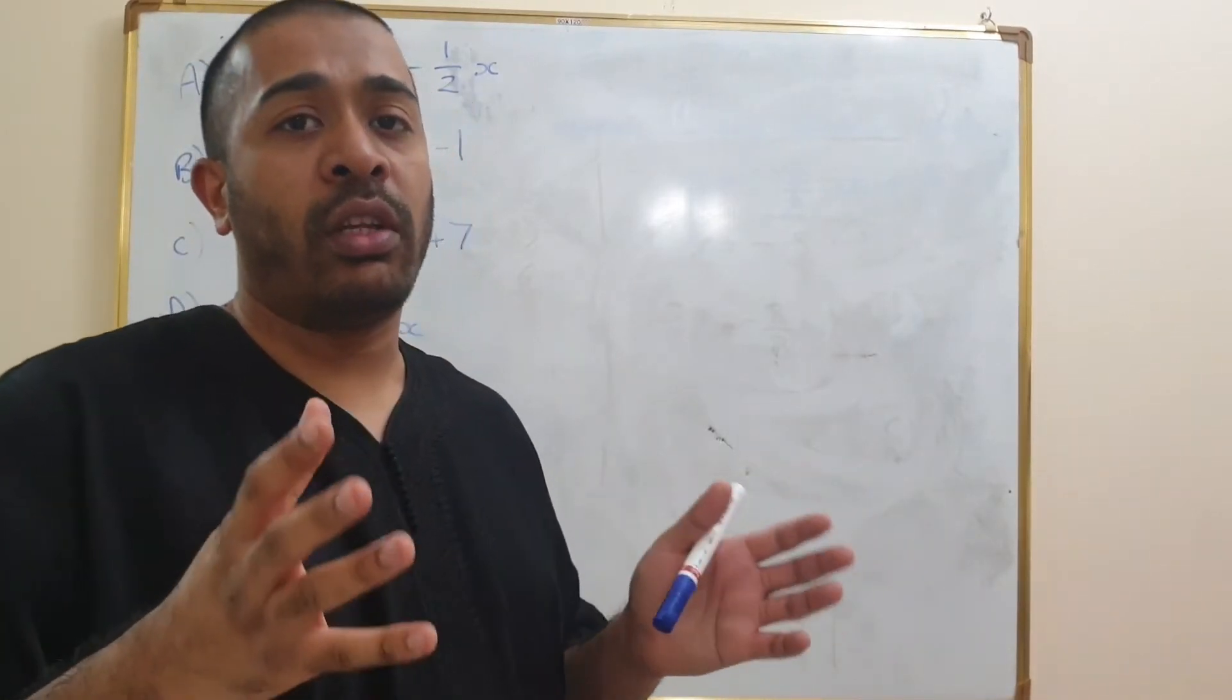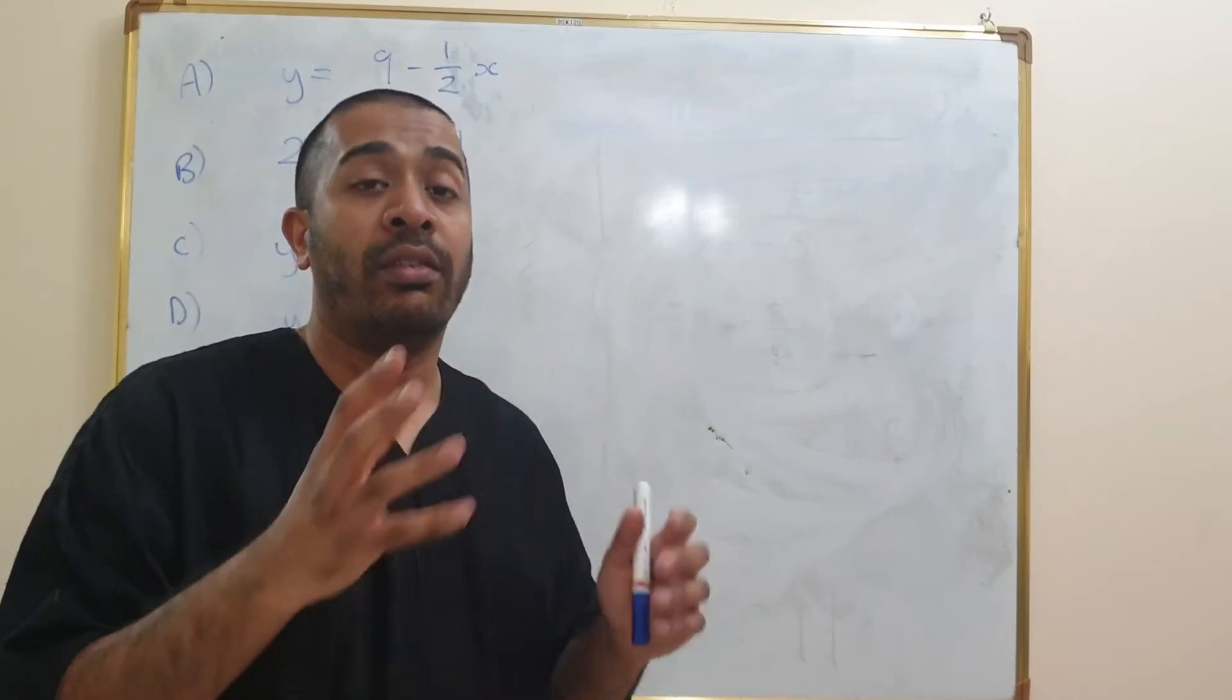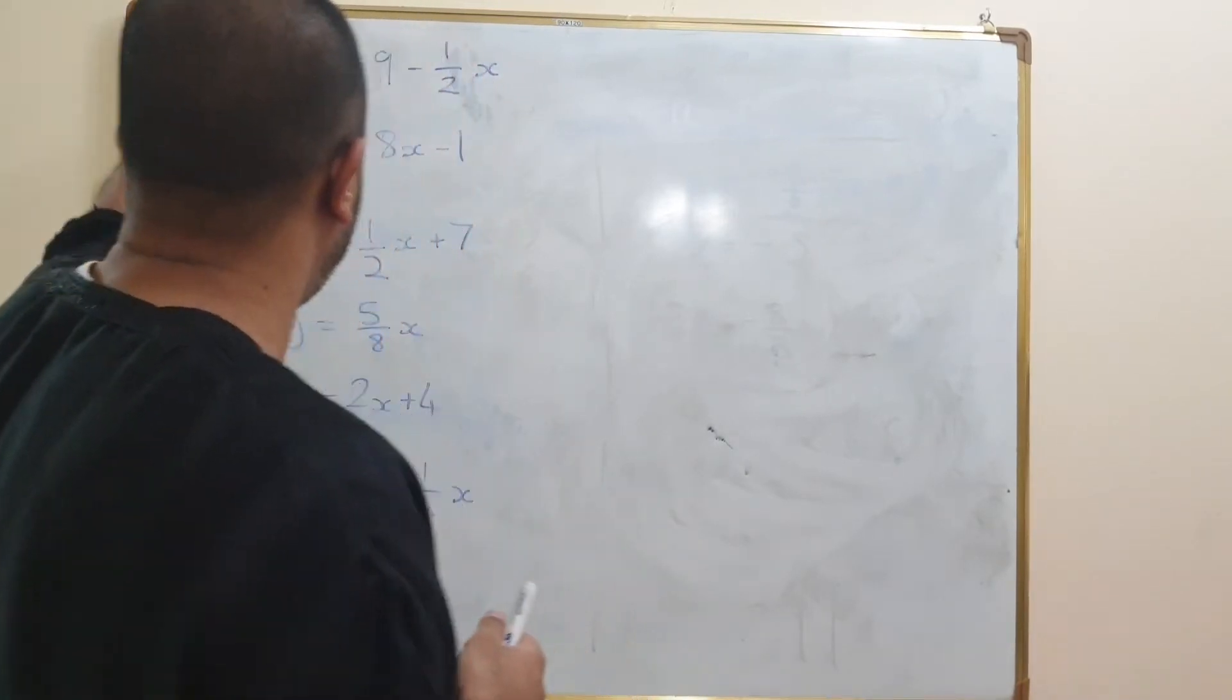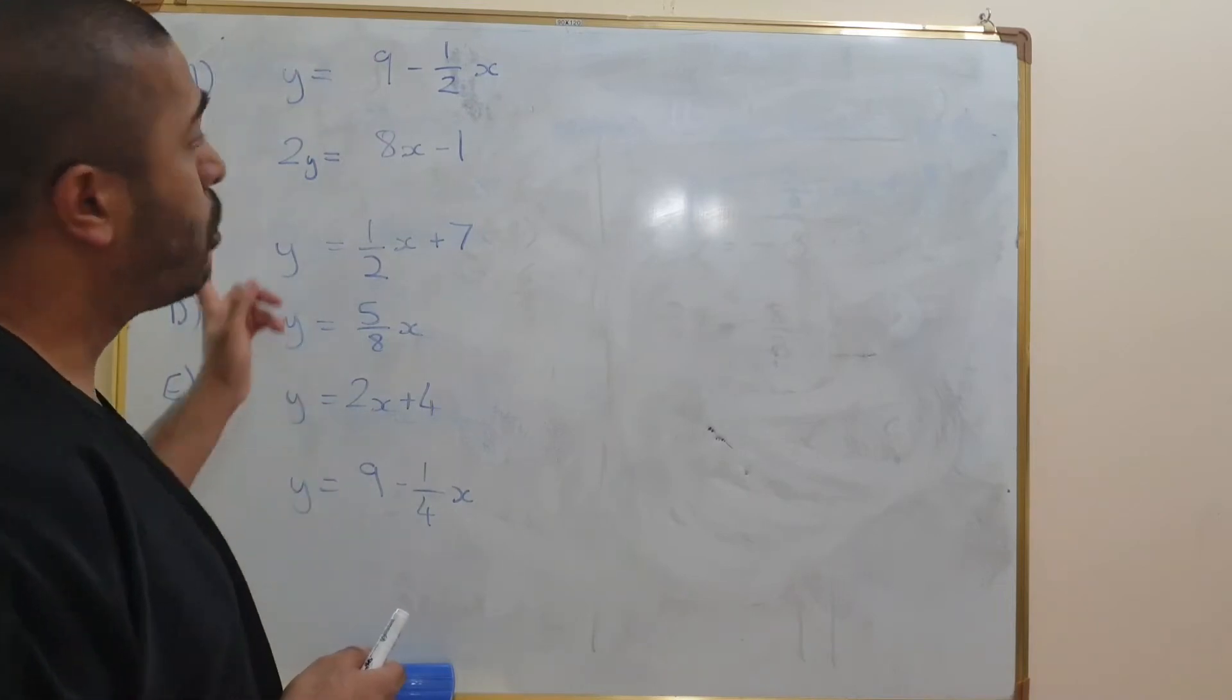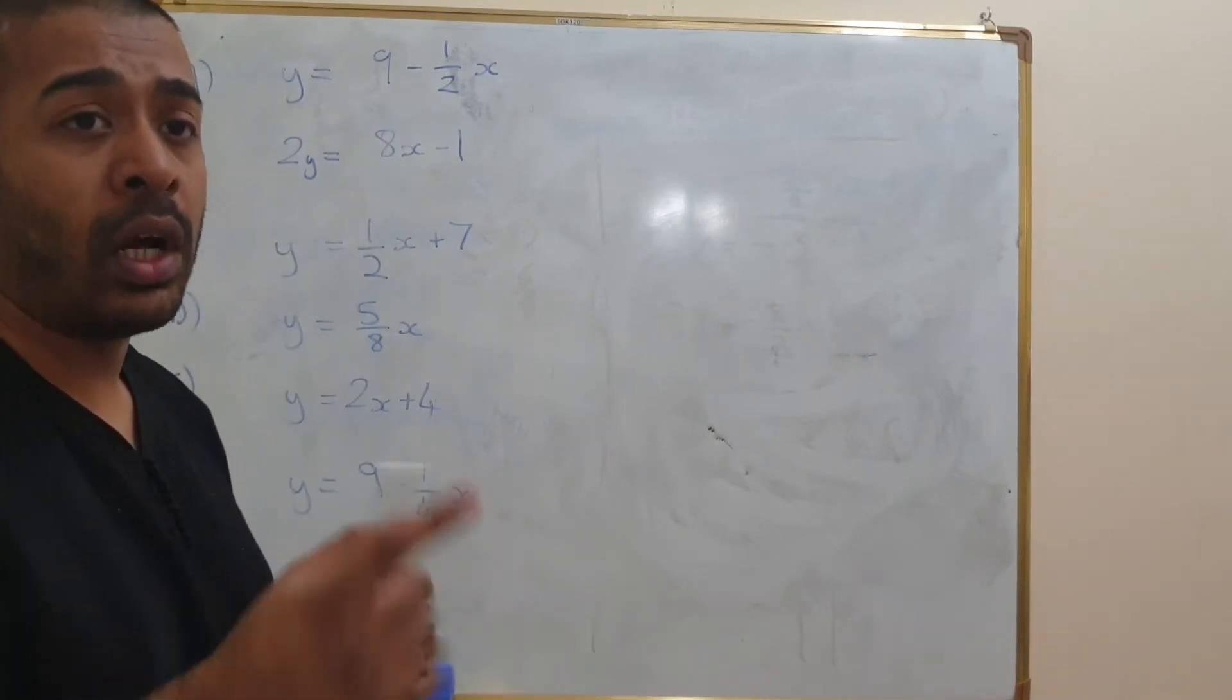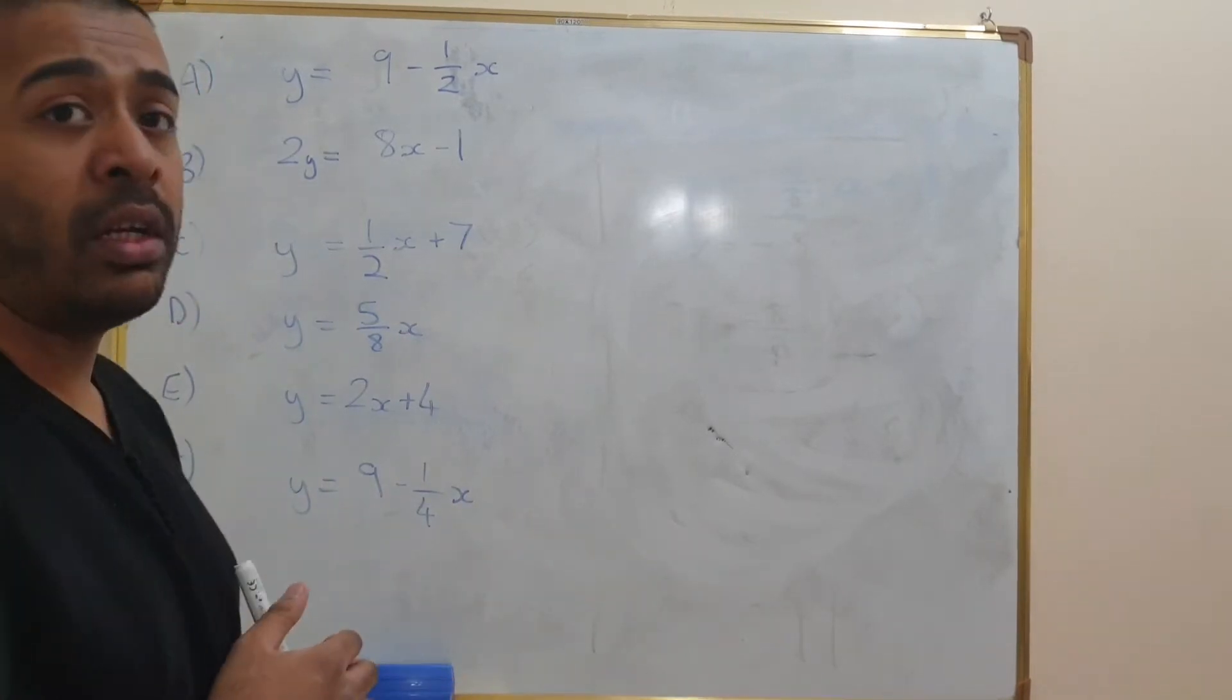So in this question, all you need to do is find which lines form perpendicular pairs and find the odd one out. I've written down all of the lines given to us. These are all of the equations. I'm just going to match up the lines which have negative reciprocals of each other, and therefore we'll be able to find the odd one out.